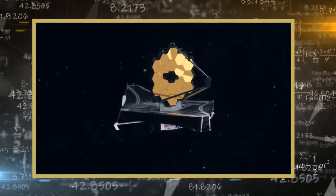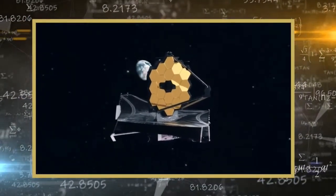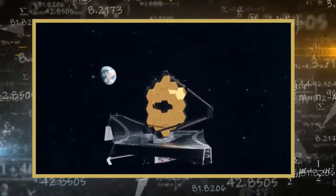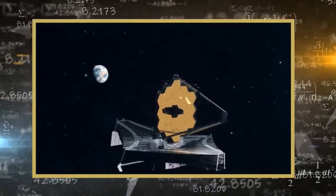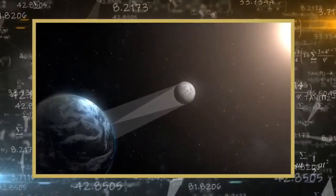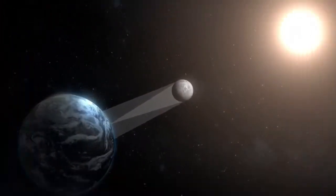We can put a James Webb telescope a million miles from the earth and know exactly how to get it there. You can predict a solar eclipse to the fraction of a second.